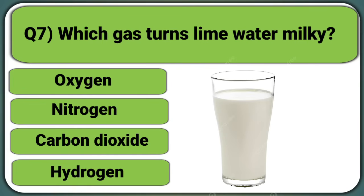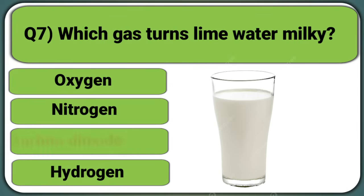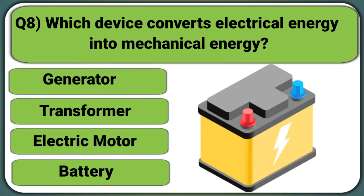Which gas turns lime water milky? Oxygen, Nitrogen, Carbon dioxide, or Hydrogen. Answer: Carbon dioxide.